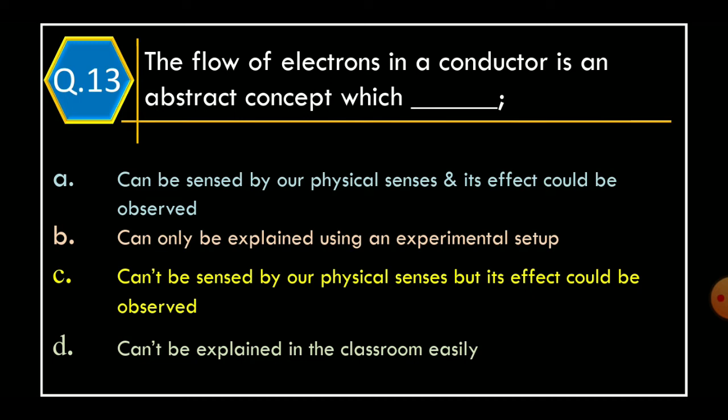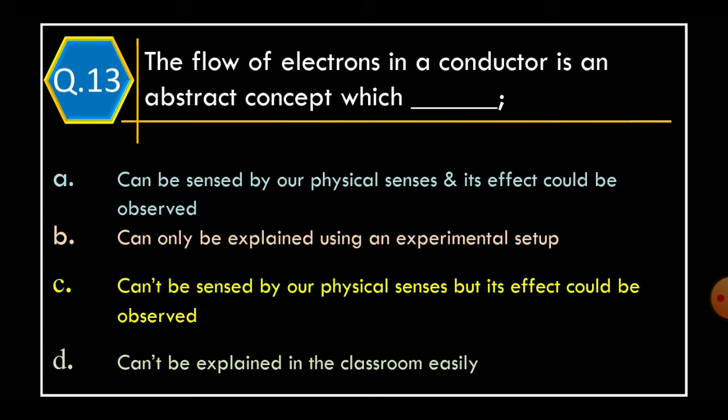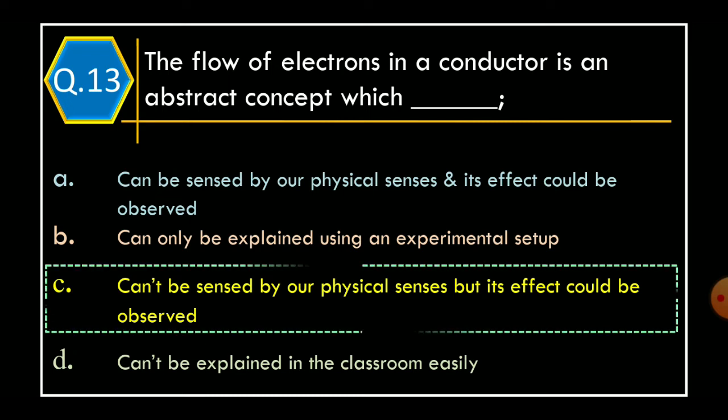Question 13: The flow of electrons in a conductor is an abstract concept of which — Option A: Can be sensed by our physical senses and its effect could be observed; Option B: Can only be explained using an experimental setup; Option C: Can't be sensed by our physical senses but its effect could be observed; Option D: Can't be explained in the classroom easily. The correct option is Option C: Can't be sensed by our physical senses but its effect could be observed.